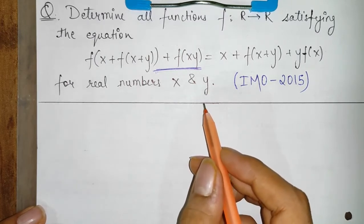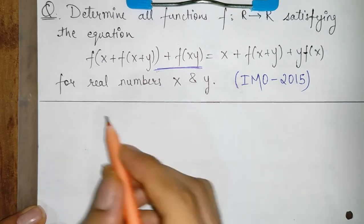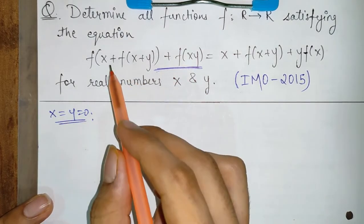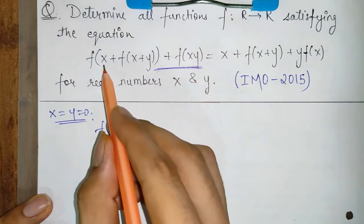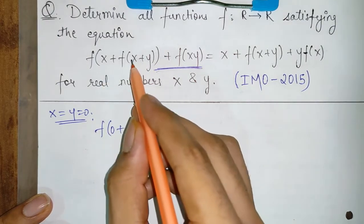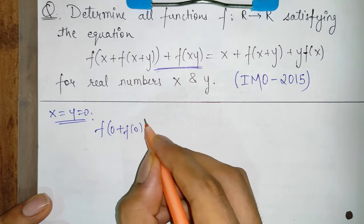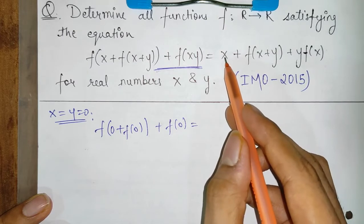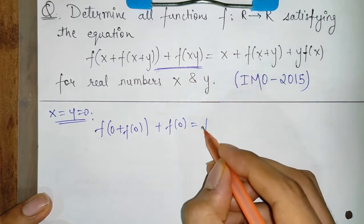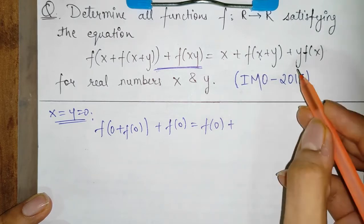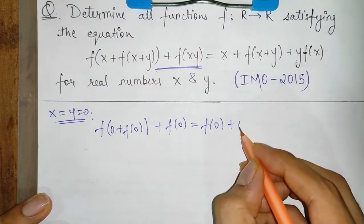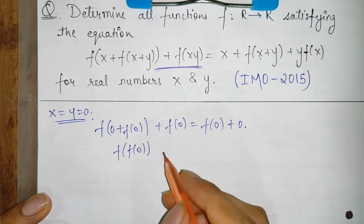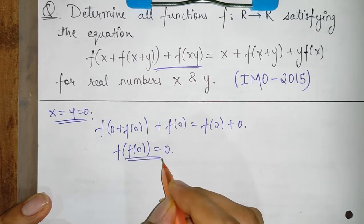Let's start with the solution. First, let's substitute x and y both equal to 0 in this equation. Substituting x = y = 0, the left side becomes f(0) + f(0), and the right side simplifies so that f(f(0)) = 0.